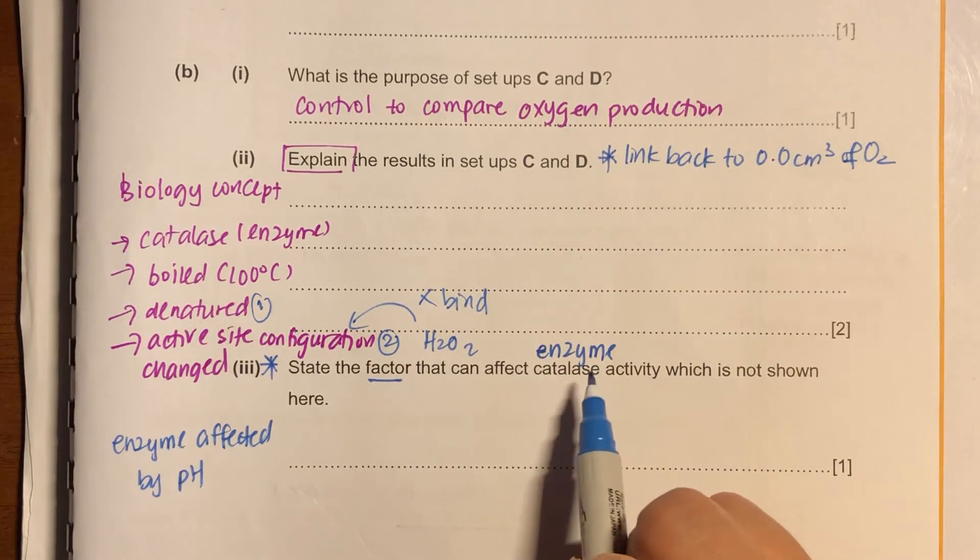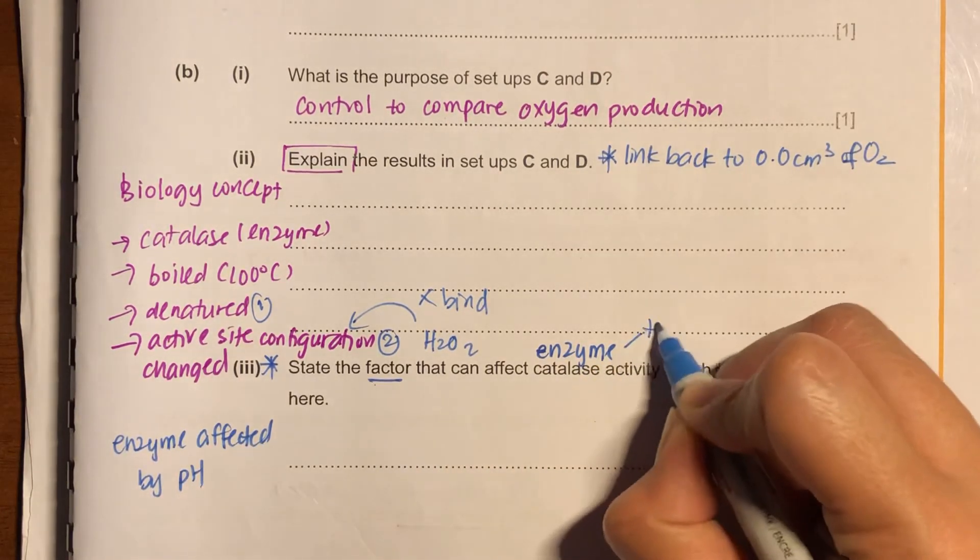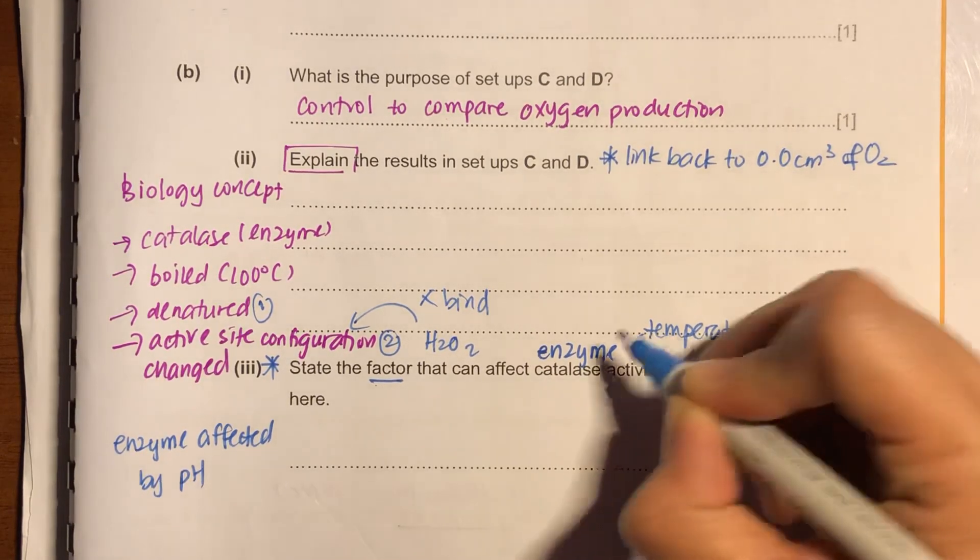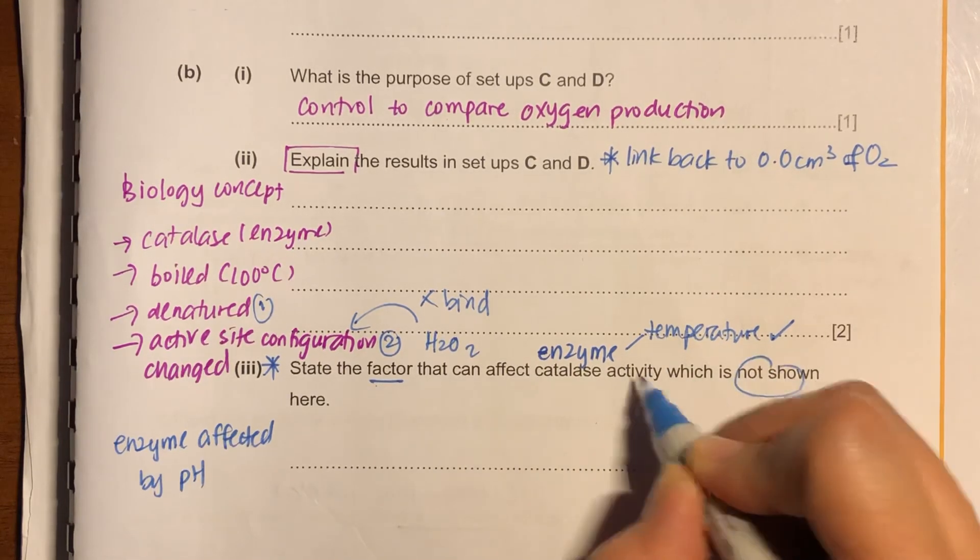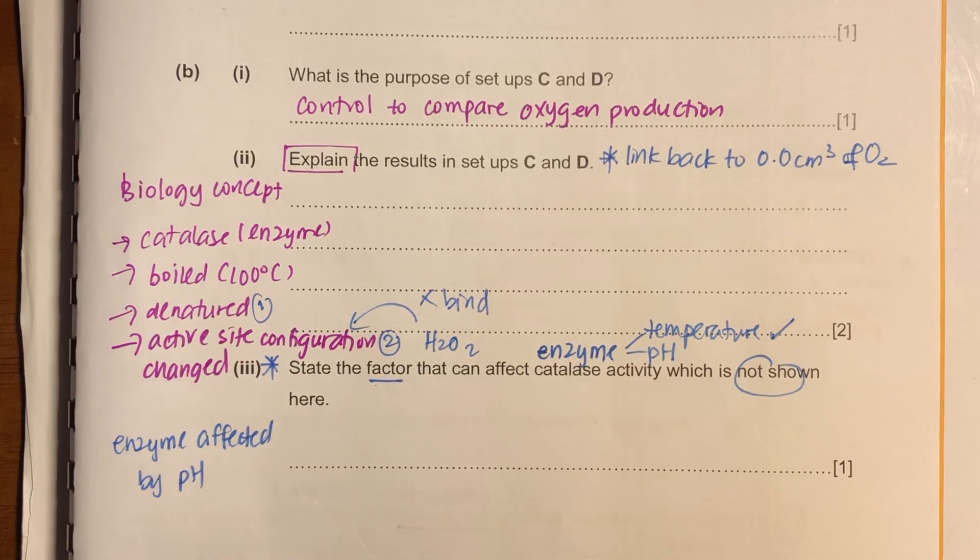Lastly, because this is an enzyme. Enzyme, the factor that affects enzyme, there are only two. Temperature, which is already in the question. And the other, not shown here, is of course pH. So that is for this question. Thank you.